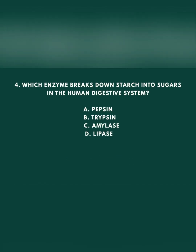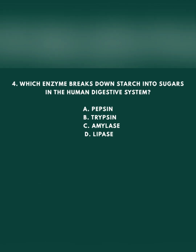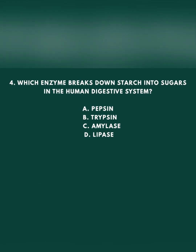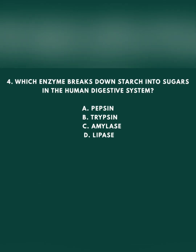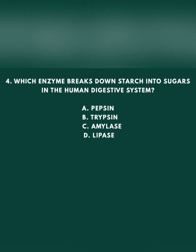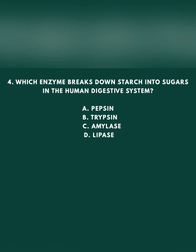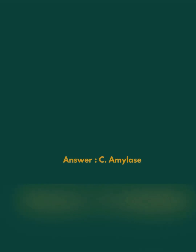Question 4: Which enzyme breaks down starch into sugars in the human digestive system? A. Pepsin, B. Trypsin, C. Amylase, D. Lipase. The answer is C: Amylase.